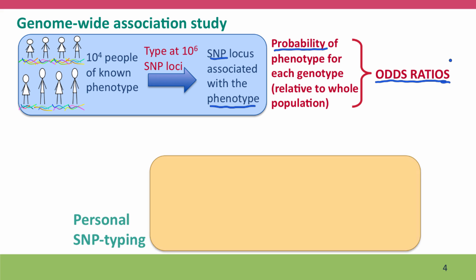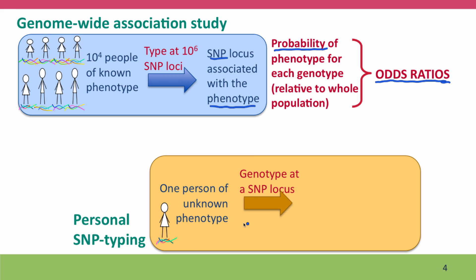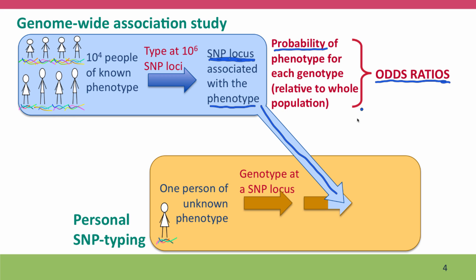These odds ratios can then be used in personal SNP typing, which begins with a person whose phenotype is not known, at least for the features of interest. That person is typed at the same million SNP loci, and attention is paid to the particular loci found to be associated with particular phenotypes. The information from the genome-wide association study — specifically the odds ratios — is used to predict that individual's probability or risk of that phenotype.